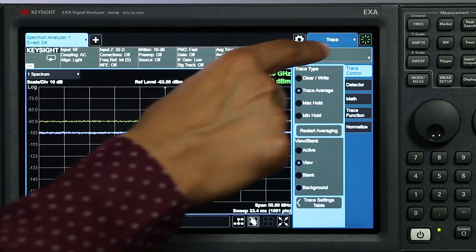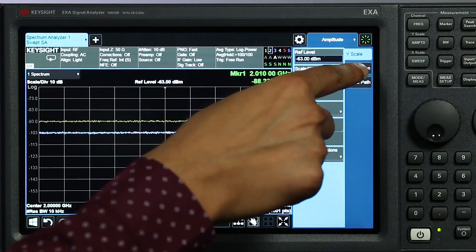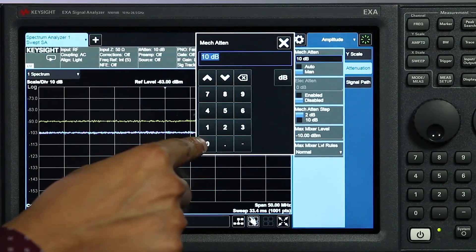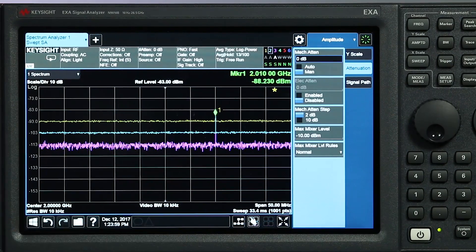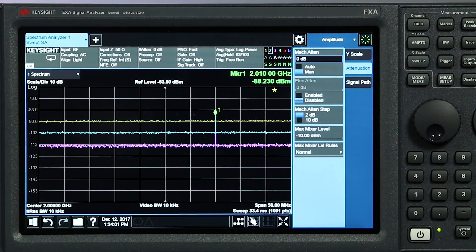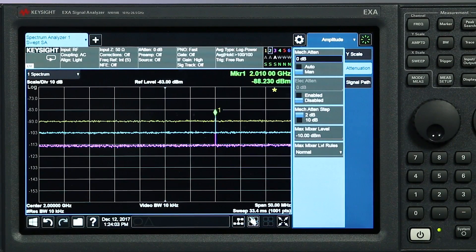Now, let's see the noise floor improvement when I lower the input attenuation. I'll reduce the input attenuation from 10 dB to 0 dB. You can see that we've picked up about 10 dB of additional dynamic range. By reducing the input attenuation and resolution bandwidth, I was able to lower the noise floor by 20 dB. Now we can clearly see the low-level spur.